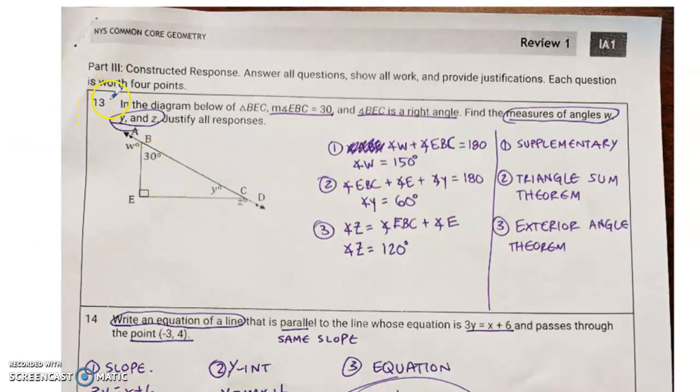Page number four, question 13. It gives us that EBC is 30, BEC is a right angle, so BEC must be 90. Find the measures of angles W, Y, and Z and justify all responses. Well, I know that angle W plus angle EBC, which is this angle, is equal to 180. Well, if this is 30, W's got to be 150 because they have to add up to a straight line. Those are supplementary. You could also say a linear pair.